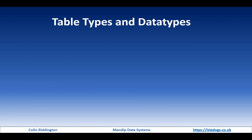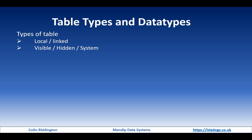First, we need to talk about different types of tables and data types. Tables can be local or linked to another database. They can be visible in the navigation pane, hidden but showable by different means, or system tables that are normally hidden but can be made visible. You can also have deep hidden tables — they do not appear in the navigation pane no matter what you do. You can also have complex tables, each of which has an attached table that is deep hidden and to which you have no access.